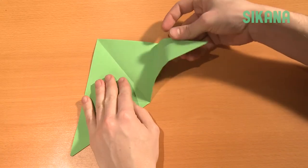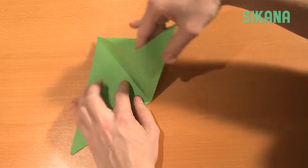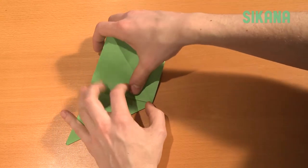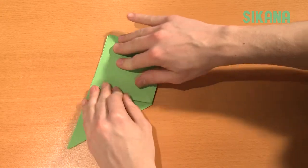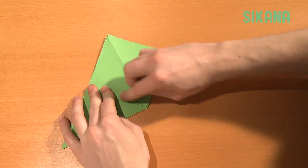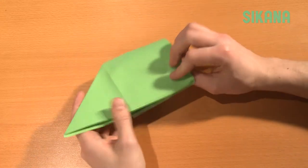Open, then open this part and fold it onto itself like this. This crease should be very easy to make. Repeat for the other side.